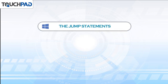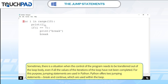Jump statements. Sometimes there is a situation when the control of the program needs to be transferred out of the loop body, even if all the values of the iterations of the loop have not been completed. For this purpose, jumping statements are used in Python.